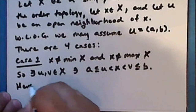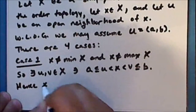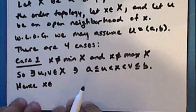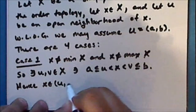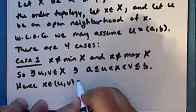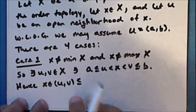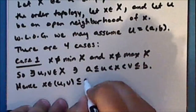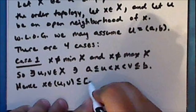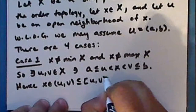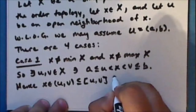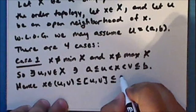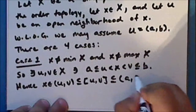Hence the point x is in the open interval from u to v, which is contained in its closure, which is the closed interval from u to v, which in turn is contained in the open interval from a to b.